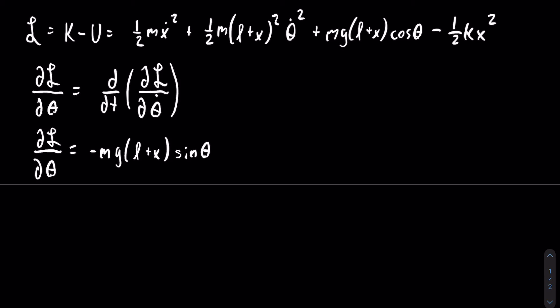Next we need to find the partial of the Lagrangian with respect to theta dot. Using the power rule, we get that this is equal to m times the quantity l plus x, squared, times theta dot.